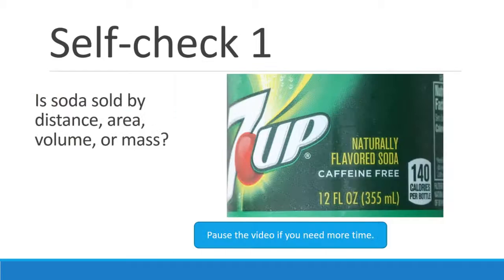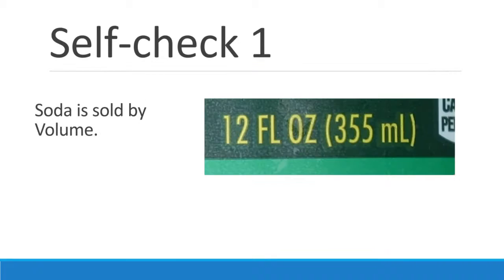Now let's figure out what we remember. For each of these five self-check questions, if you need to pause for a moment, do so because the next slide is going to have the answer. If you have a soda — or you're going to go buy a soda — is soda sold by distance, area, volume, or mass? And yes, it is that easy. Soda is sold by volume.